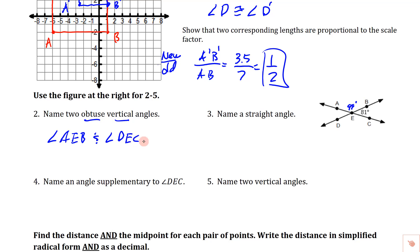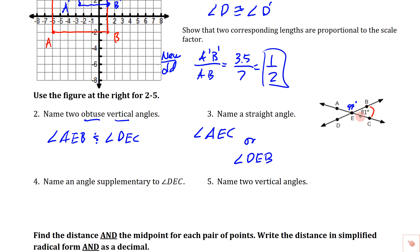Name a straight angle — we've got a couple choices. We could do the straight angle from A to C: angle AEC, using E as the vertex. Or we could do angle DEB, which also equals 180 degrees. Name a supplementary angle to angle DEC — supplementary means they add up to 180 degrees. That would be angle BEC. We could also use angle AED — either one works.